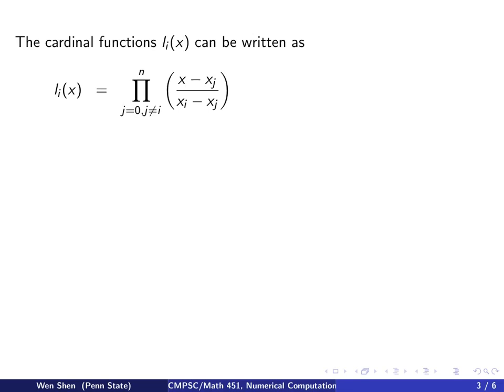We now look at a way of constructing these cardinal functions. Consider the function number i. So li of x can be simply written as the product of all these terms: x minus xj on the numerator, and xi minus xj on the denominator. All these terms are multiplying with each other for j from 0 to n, except at the point when j equals i, and that is excluded. We know j from 0 to n gives us n plus 1 terms minus 1 term, so these will be n terms. So the highest power for this cardinal function will be x to the power n. Therefore, this is a polynomial of degree n.